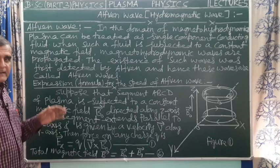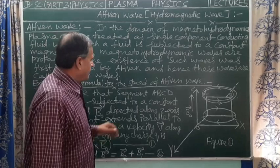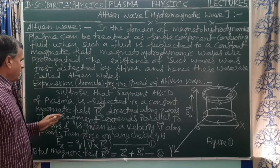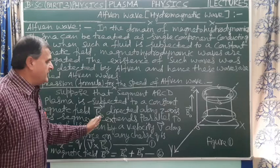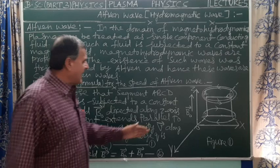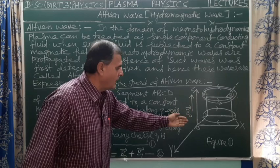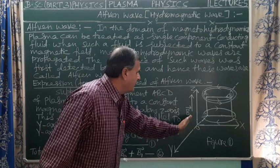Now, for the expression and formula for the speed of Alfvén wave, that is Alfvén speed: suppose that a segment ABCD of plasma, as shown in figure 1, is subjected to a constant or uniform magnetic field B0, directed along the z-axis as shown in figure 1. B0 is the external constant magnetic field subjected to plasma along the z-axis.